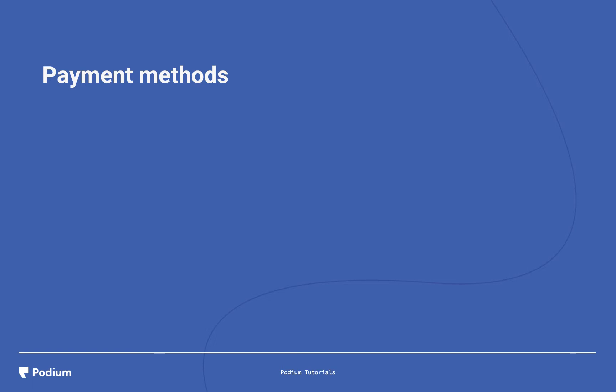When you send a payment request to a customer, they'll be able to pay with either a credit card, debit card, Apple Pay, or Google Pay. Alternatively, you can also enable the ability to send bank transfers. You'll also be able to restrict which payment methods are available to your team.